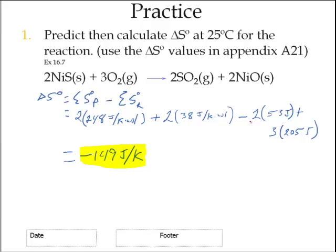Minus the 2 moles of nickel sulfide and the 3 moles of oxygen gas. So add those two, subtract those, you get negative 149. Now this value, this negative ΔS, means that somehow this reaction is becoming more ordered, or the amount of entropy is decreasing.